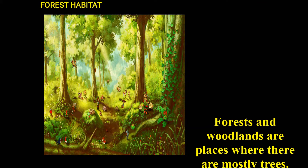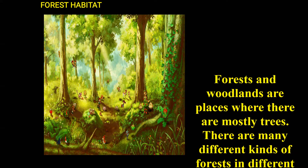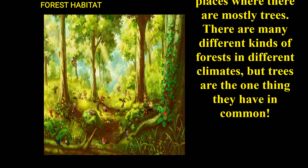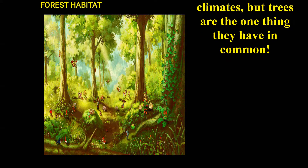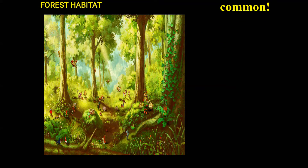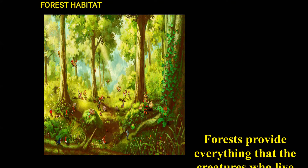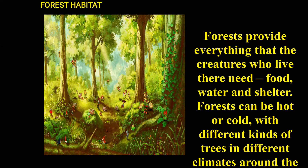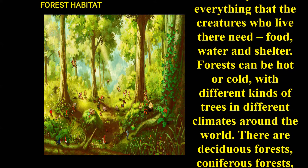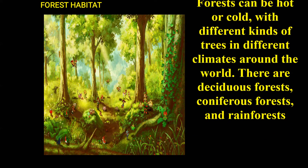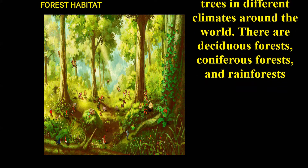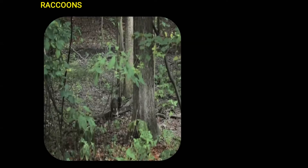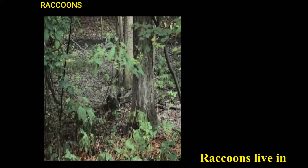Now let us discuss about forest habitats. Forests and woodlands are places where there are mostly trees. There are many different kinds of forests in different climates, but trees are one thing they have in common. Forests provide everything a creature needs — food, water and shelter. Forests can be hot or cold, and around the world there are deciduous forests, coniferous forests, and rain forests.